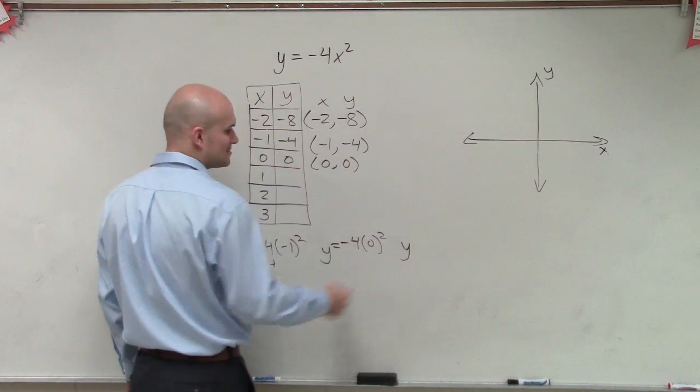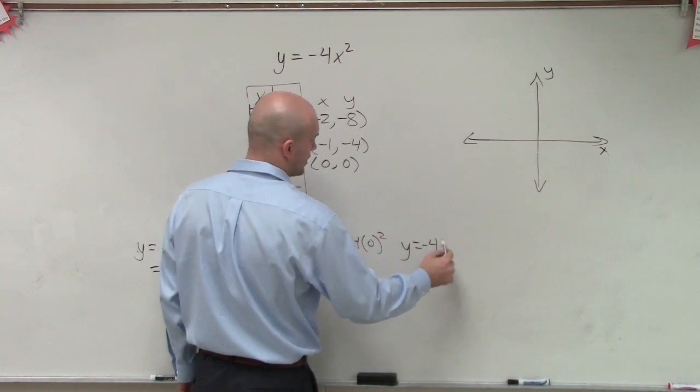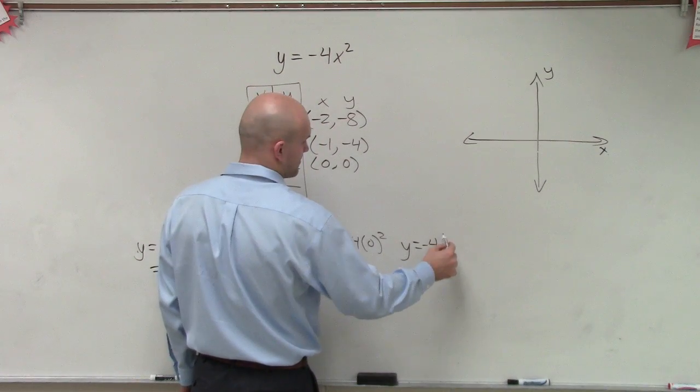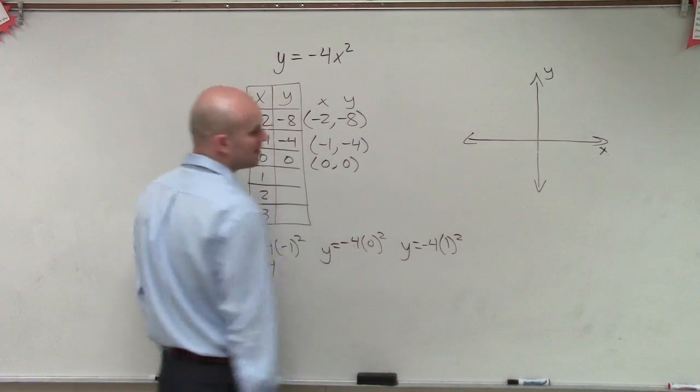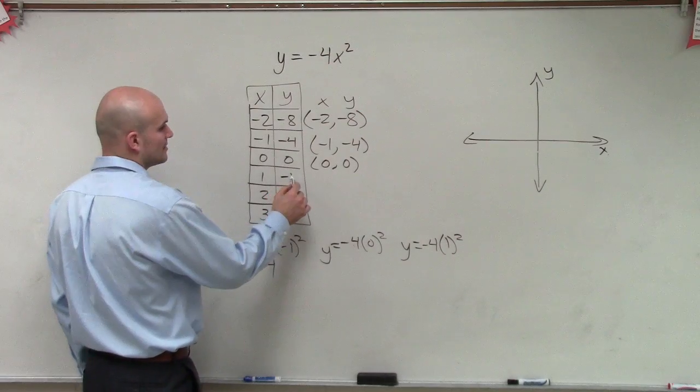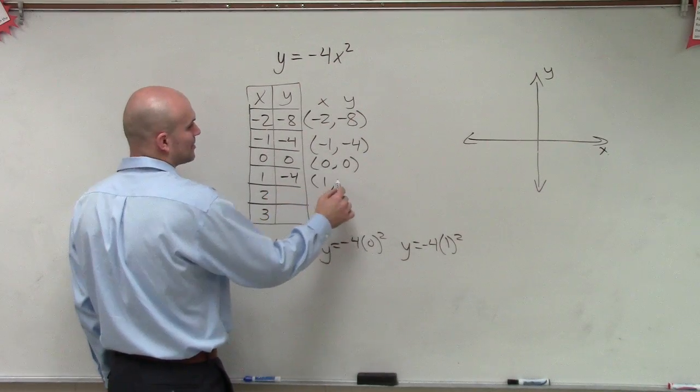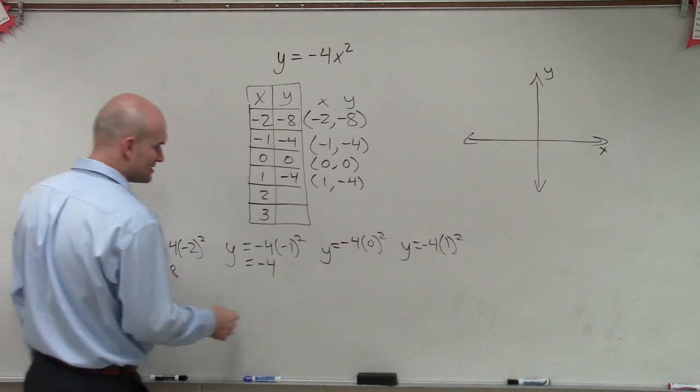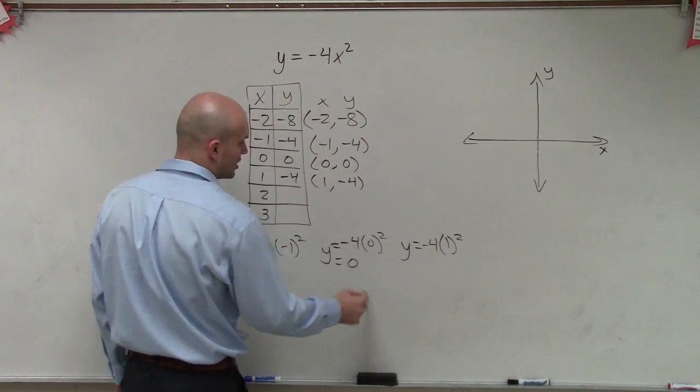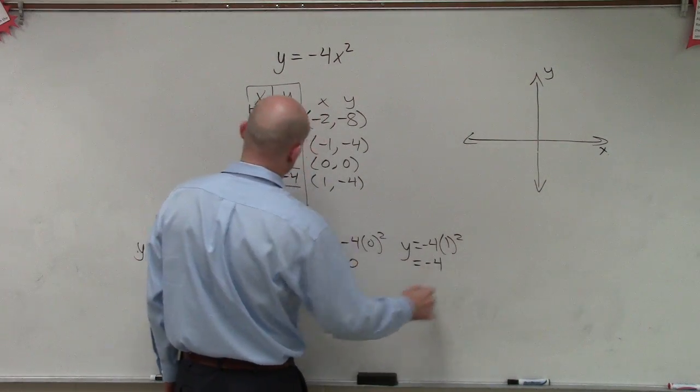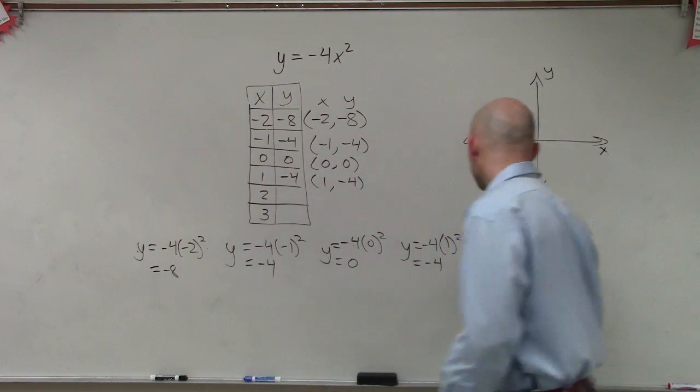Then let's continue on. So y equals negative 4 times 1 squared. 1 squared is 1. 1 times negative 4 is negative 4. So now we're going to produce a very similar point. That equals negative 4.